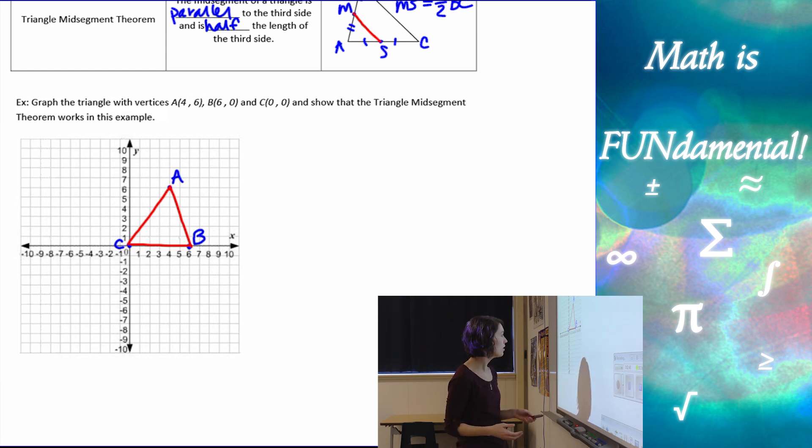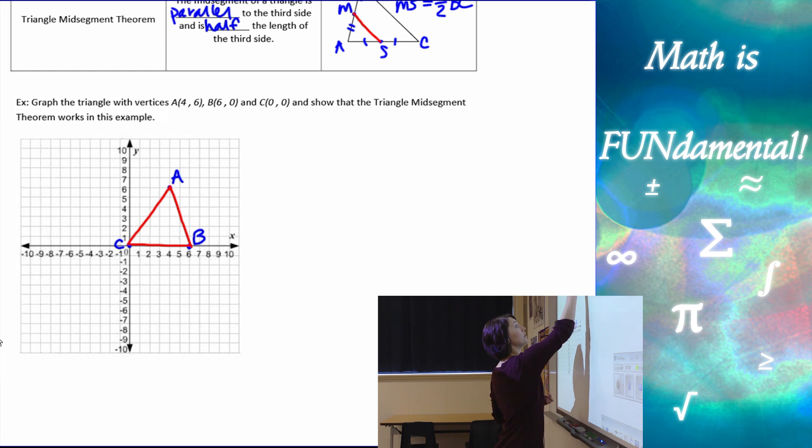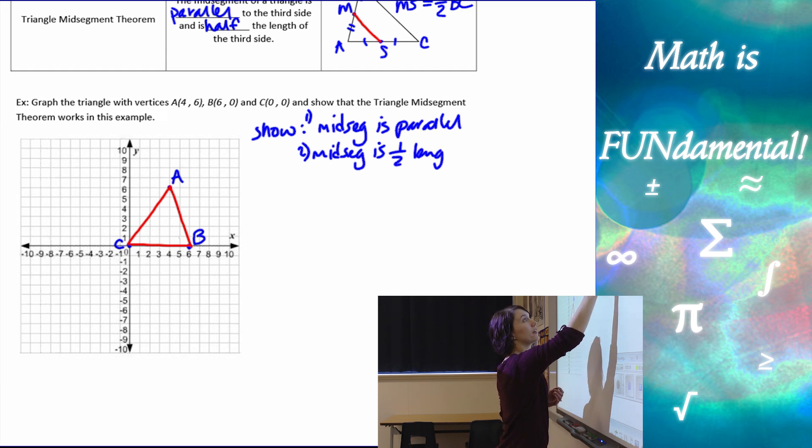So show an example that it works. In this case, I can choose really any mid-points that I want to, to make my mid-segment. So if I want to also find that the length, I want to show, let's talk about what we need to show, I need to show that the mid-segment is parallel to the third side, and I need to show that the mid-segment is half the length of the third side.